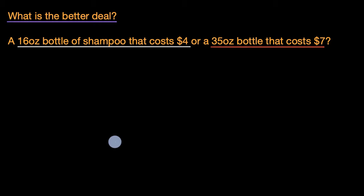So there's several ways of approaching this. You might see that 35 ounces is more than double 16 ounces and the price isn't more than double $4. So this is probably the better deal. But just in case it doesn't jump out at you that way, you could think about something known as unit pricing or unit costs.